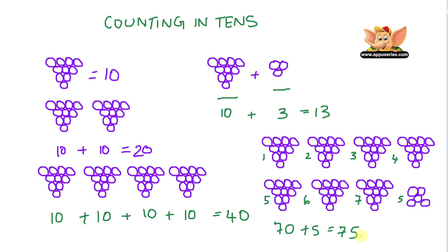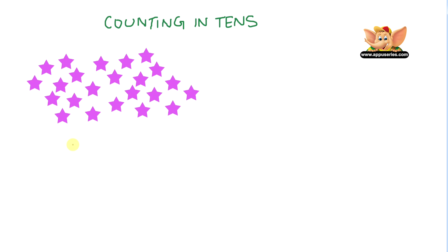I guess we've had too much of these grapes. So let's proceed with a different set of objects. We have a whole bunch of stars here. So how many groups of ten can you make out of these stars? There are twenty-three stars here. So let's try grouping this.